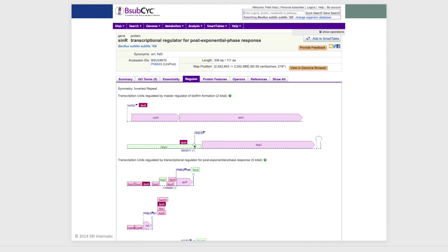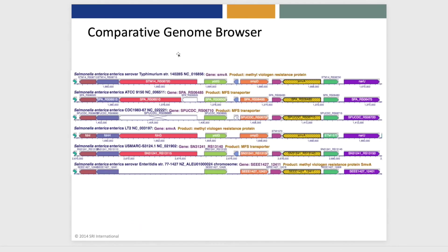The Regulon tab shows the operons that are regulated by this regulator. This is our genome browser in its comparative mode, which shows six different genomes aligned around an orthologous gene to see conserved and non-conserved regions.